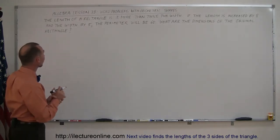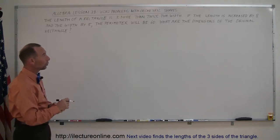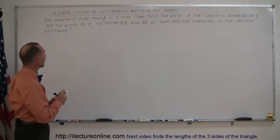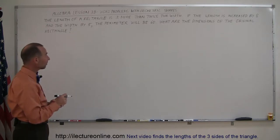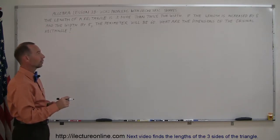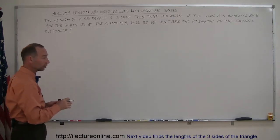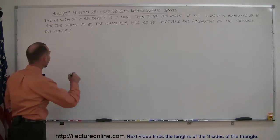Let's read the problem. It says the length of a rectangle is two more than twice the width. If the length is increased by eight and the width by five, the perimeter will be sixty. What are the dimensions of the original rectangle?